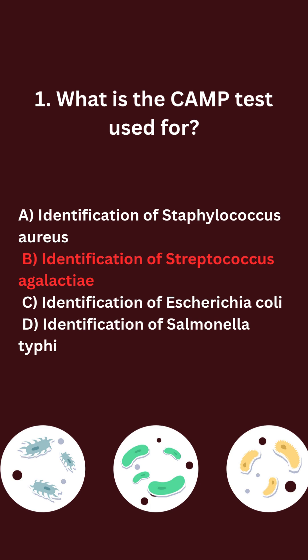What is the CAMP test used for? A. Identification of Staphylococcus aureus. B. Identification of Streptococcus agalactiae. C. Identification of Escherichia coli. D. Identification of Salmonella typhi.